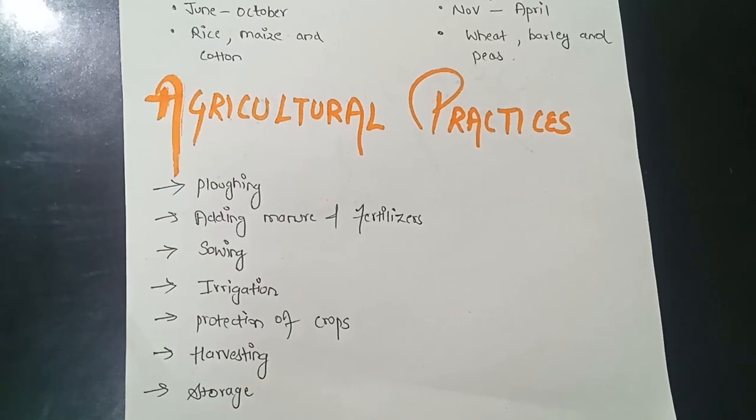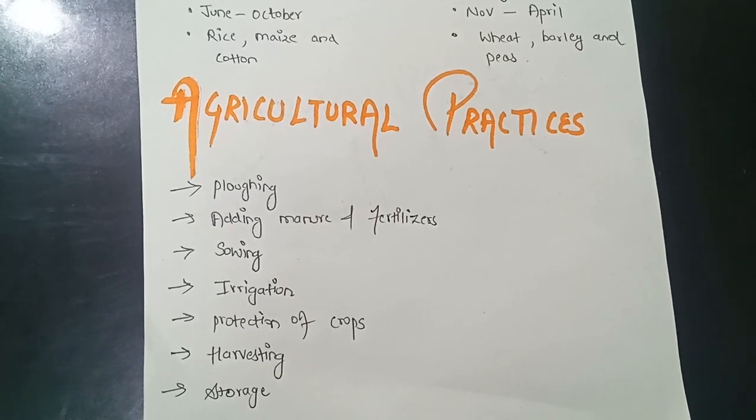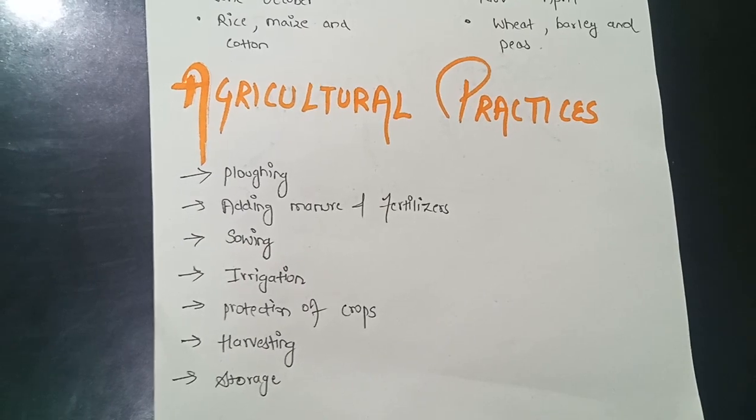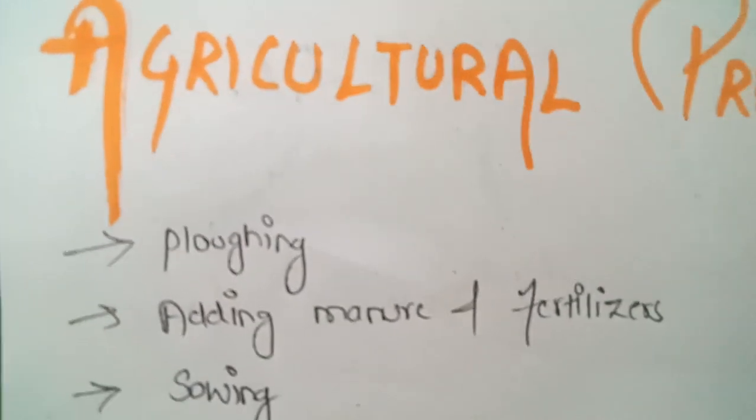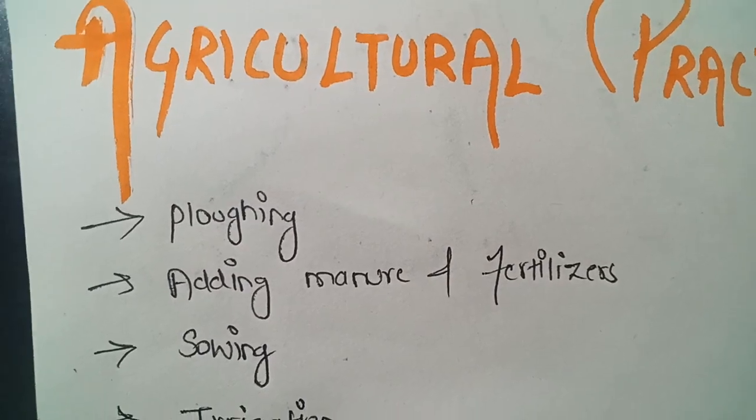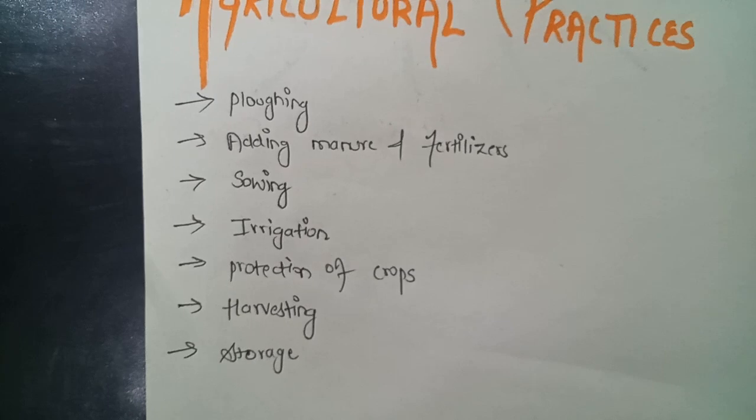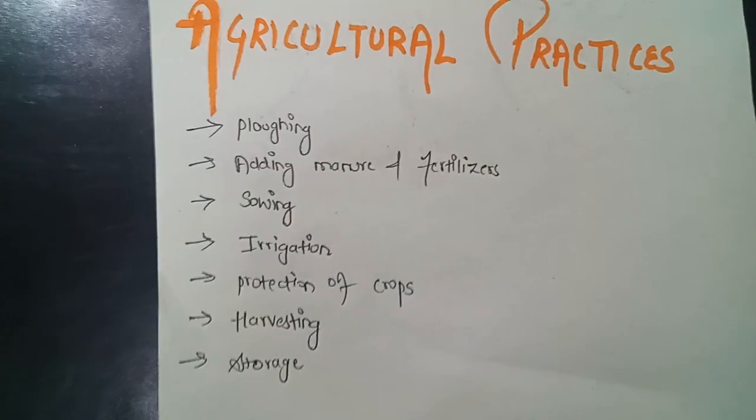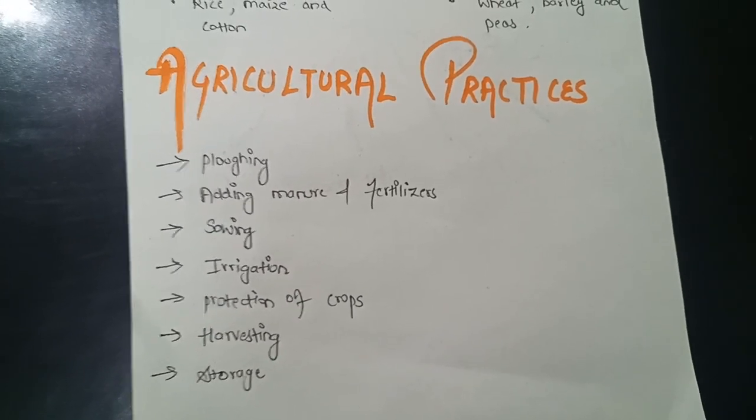But agricultural practices are also important for growing certain kinds of crops. And we are having different kinds of agricultural practices over here. Plowing, adding manure and fertilizers, sowing, irrigation, protection of crops, harvesting and storage. These all are really very important for growth of a plant.